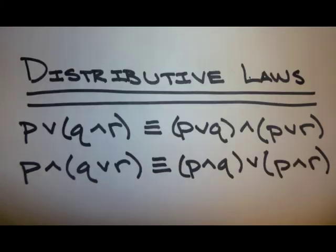The distributive laws: P or (Q and R) is logically equivalent to (P or Q) and (P or R). P and (Q or R) is logically equivalent to (P and Q) or (P and R).